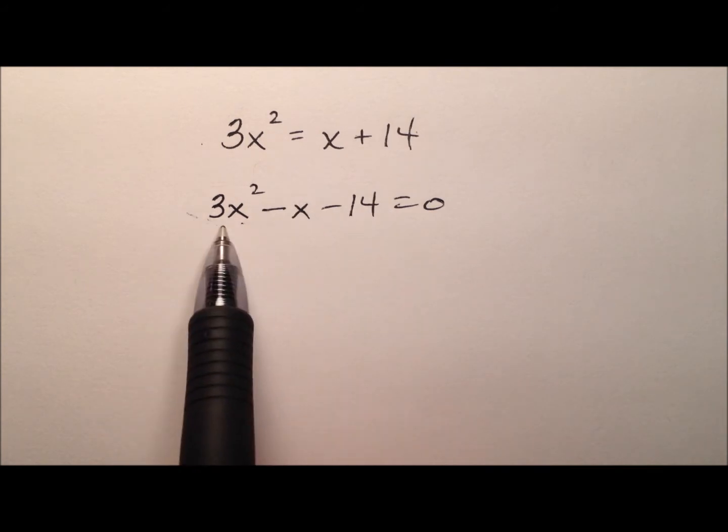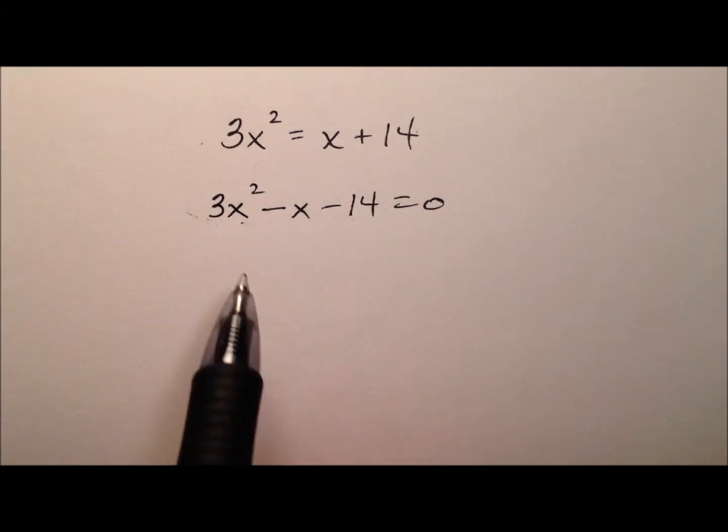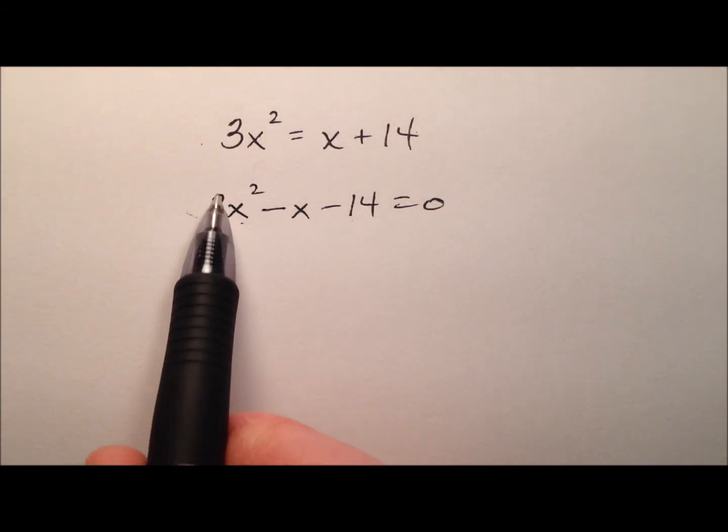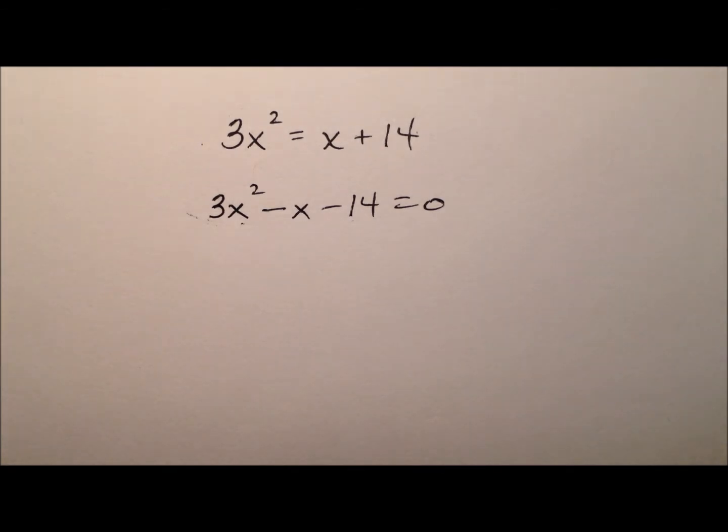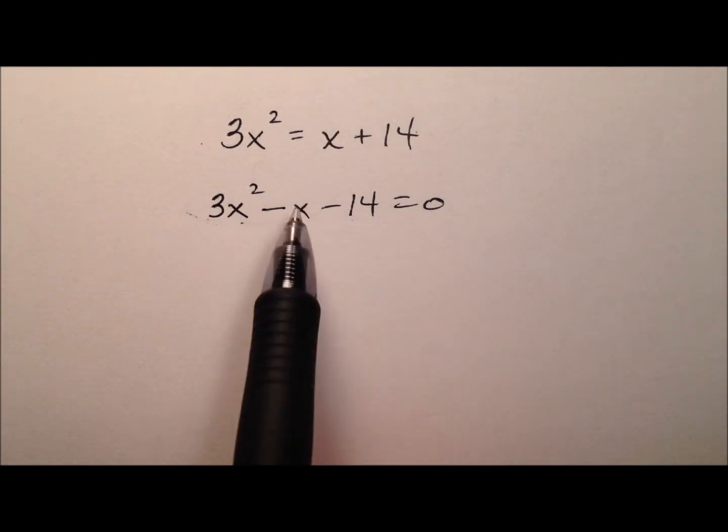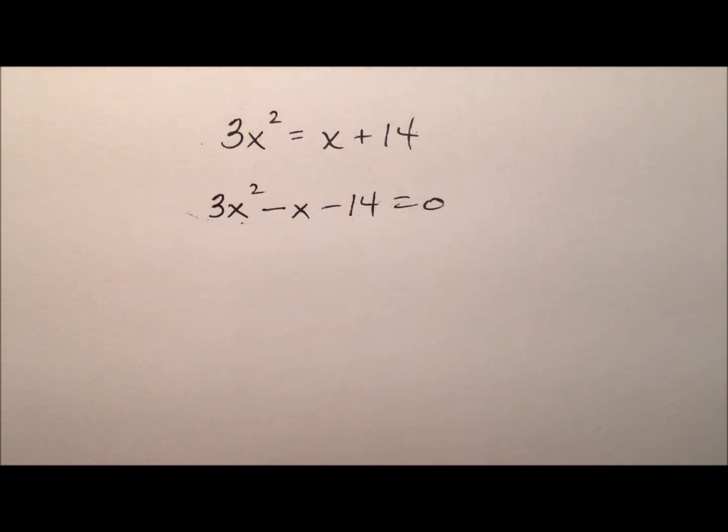Okay, so now our job is to factor this quadratic expression. And you'll notice the leading coefficient is not 1, so we'll have to use the AC method. There's a lot of different methods out there for factoring quadratic expressions. I'm pretty partial to the AC method.